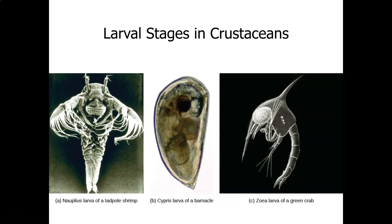These are images of larval stages in crustaceans. This is the larva of a green crab, this is the larva of a barnacle, and this is the larva of a shrimp.